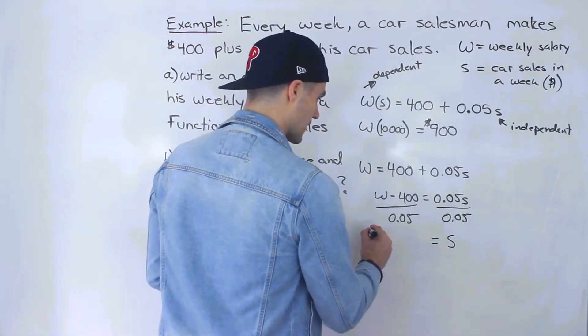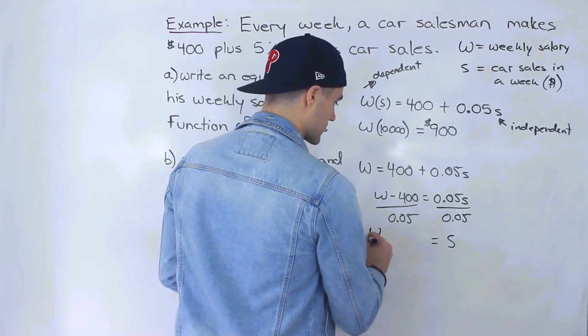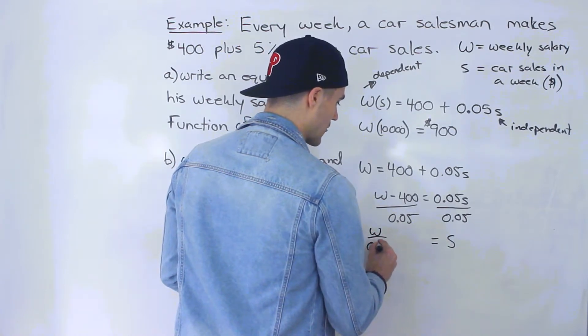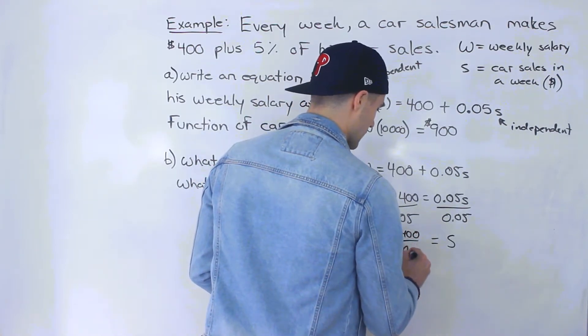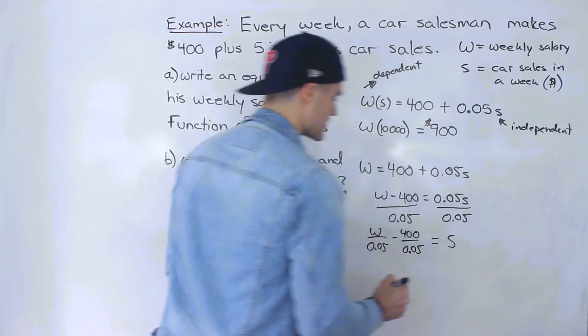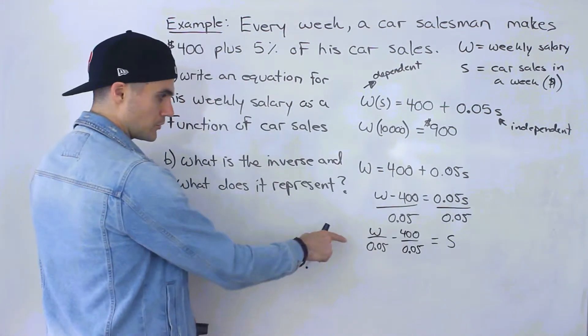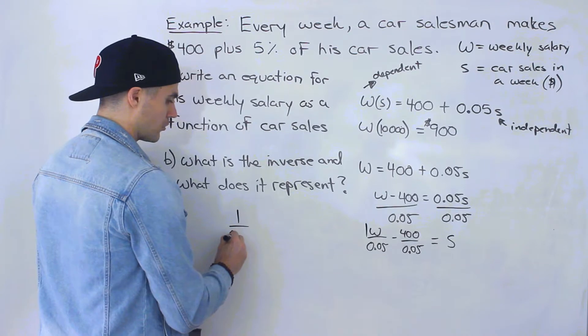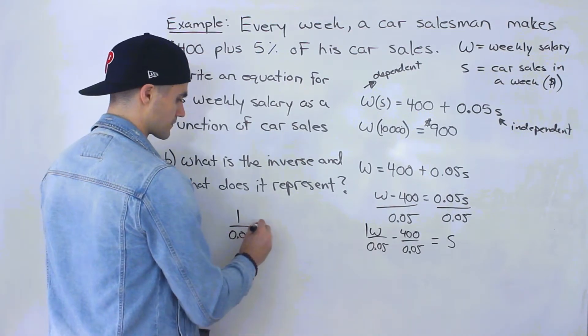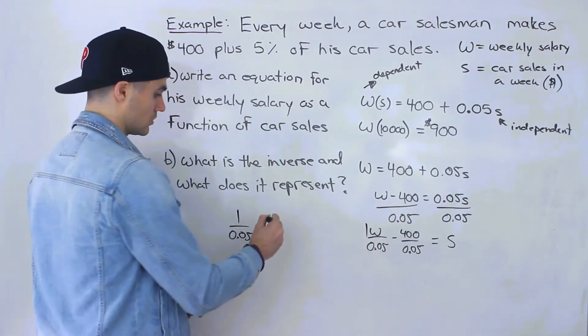Now this is a bit ugly because we have a fraction and then we have a decimal in the fraction. So what we could actually do is we could split this up. So we could have W over 0.05 minus 400 over 0.05. And so W over 0.05, there's like a one in front. So one over 0.05, that's actually equal to 20.